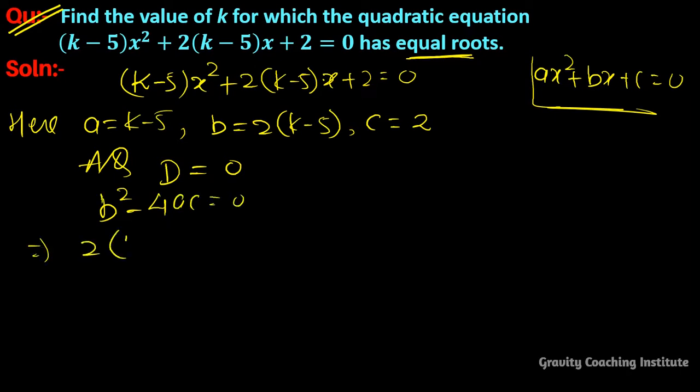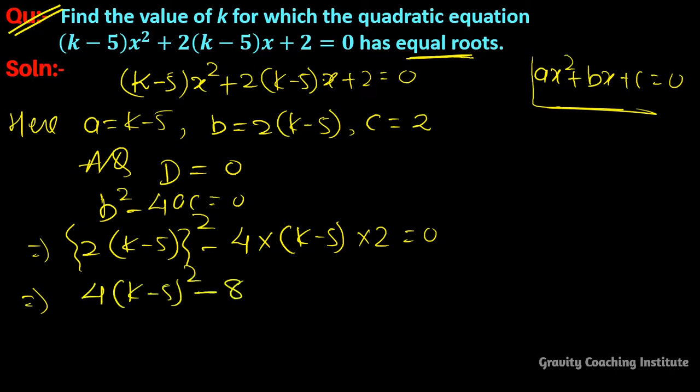Substituting the values: [2(k - 5)]² - 4(k - 5)(2) = 0. This simplifies to 4(k - 5)² - 8(k - 5) = 0.